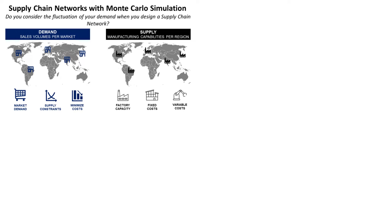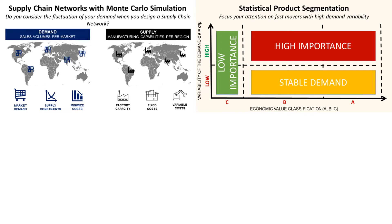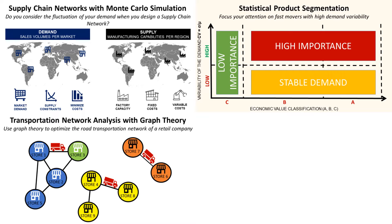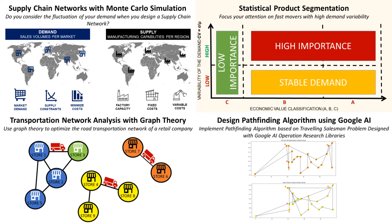First, supply chain network design — how can you use linear programming to design your network of factories and warehouses to fulfill market demand? Statistical product segmentation — how can you implement a statistical methodology to segment your products based on turnover and demand variability? Transportation network analysis with graph theory — how can you use graph theory to optimize the road transportation network of a retail company? And finally, warehouse picking pathfinding algorithm — how can you implement a pathfinding algorithm based on the travel assessment problem with a library of Google AI operations research?